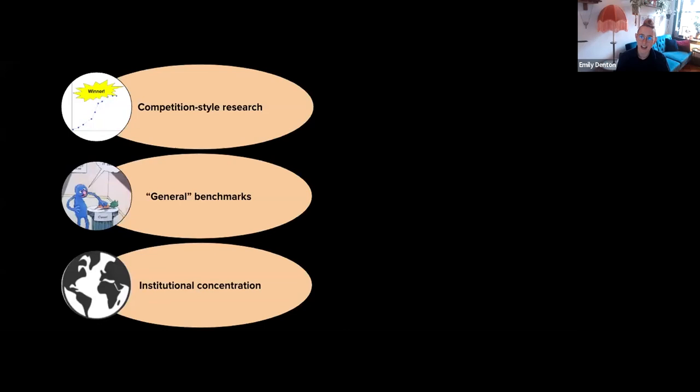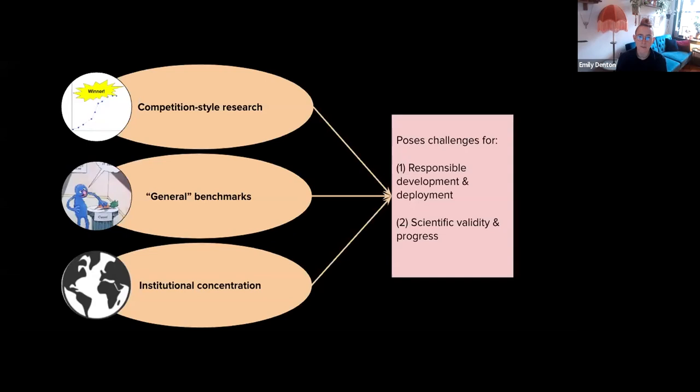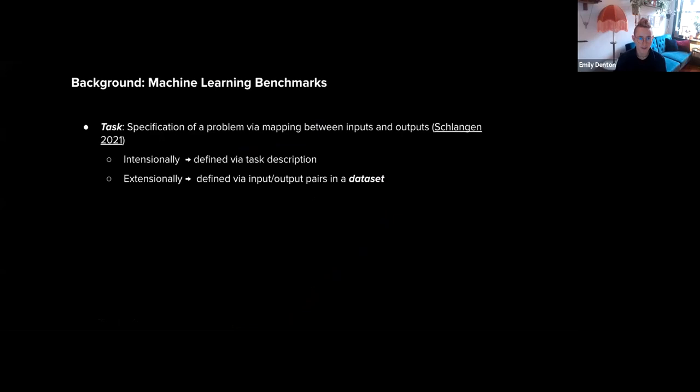There are three main topics I'm going to cover: a competition style of research, something we term 'general benchmarks,' and institutional concentration within the field. Each of these characteristics of machine learning research poses challenges both for the responsible development and deployment of AI systems, but also for the scientific validity and progress of the field.